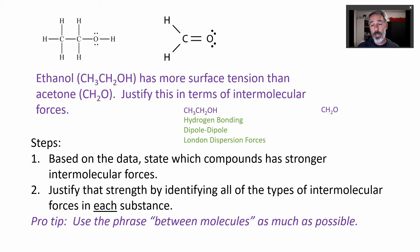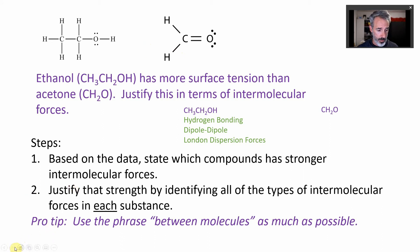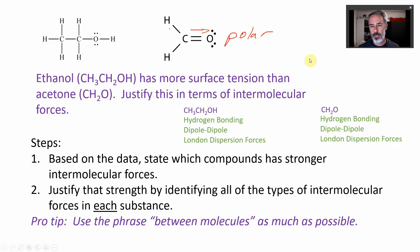Acetone cannot hydrogen bond. But can it do dipole-dipole interactions? Looking at its structure: it has three electron groups, meaning it's trigonal planar with 120-degree bond angles. Oxygen is definitely more electronegative than carbon, so there's a net dipole — it is polar. Therefore acetone has dipole-dipole forces and London dispersion forces between its molecules, but no hydrogen bonding. Ethanol has more forces and a much stronger force, consistent with it having more surface tension.